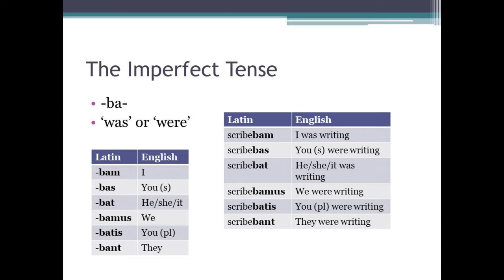Verbs in the imperfect tense have 'BA' in them, and are usually translated by the word 'was' or 'were.' The imperfect is used to represent an ongoing action in the past. Let's have a look at the example of the verb 'to write.' Scribabam means 'I was writing.' Scribabas means 'you singular were writing.' Scribabat means 'he, she, or it was writing.'